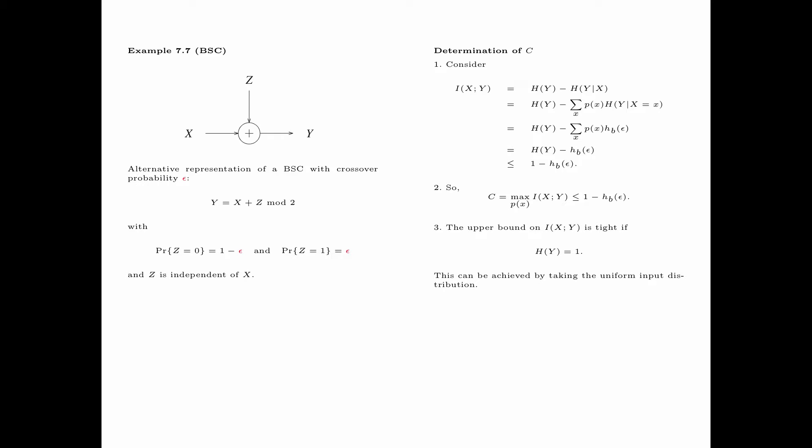The upper bound on I(X;Y) is tight if H(Y) equals 1. It can be shown that by taking the input distribution to be the uniform distribution, the output distribution is also the uniform distribution, so the entropy of Y equals 1. Therefore, we conclude that the capacity of the channel is equal to 1 minus HB(epsilon) bits per use.